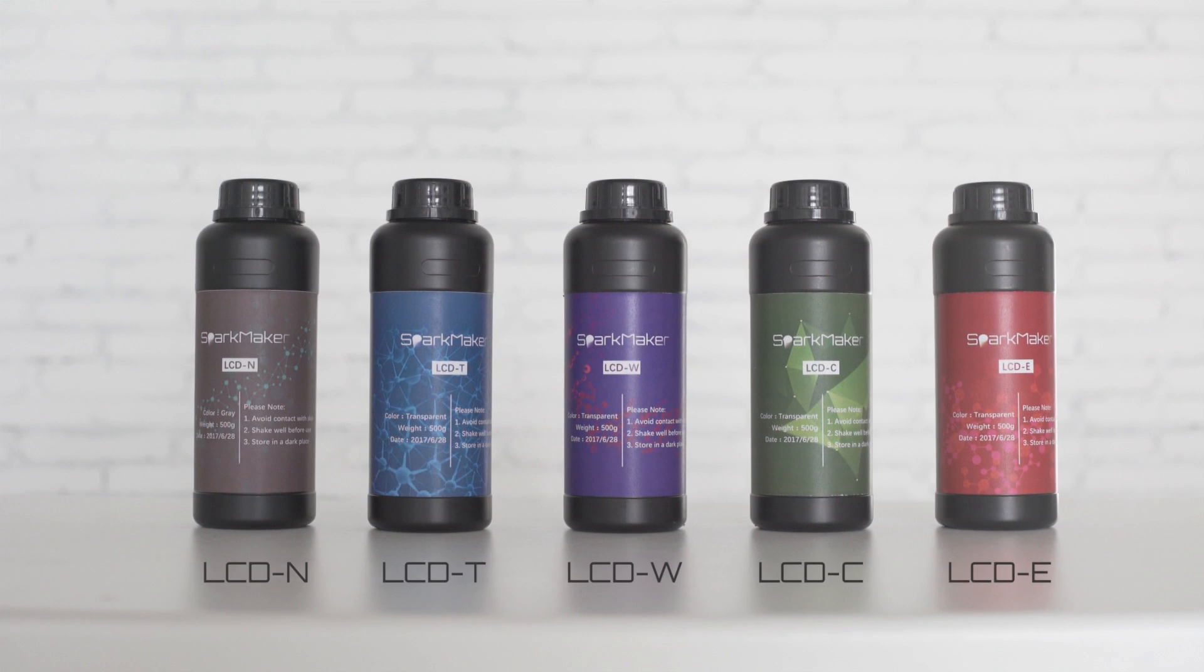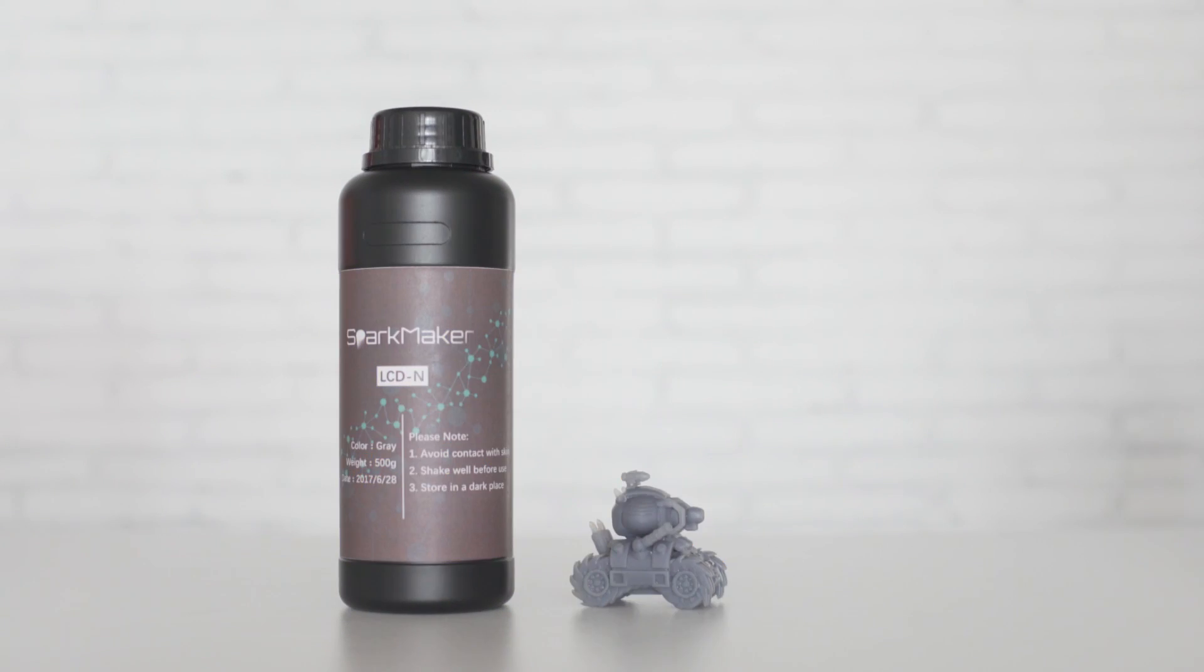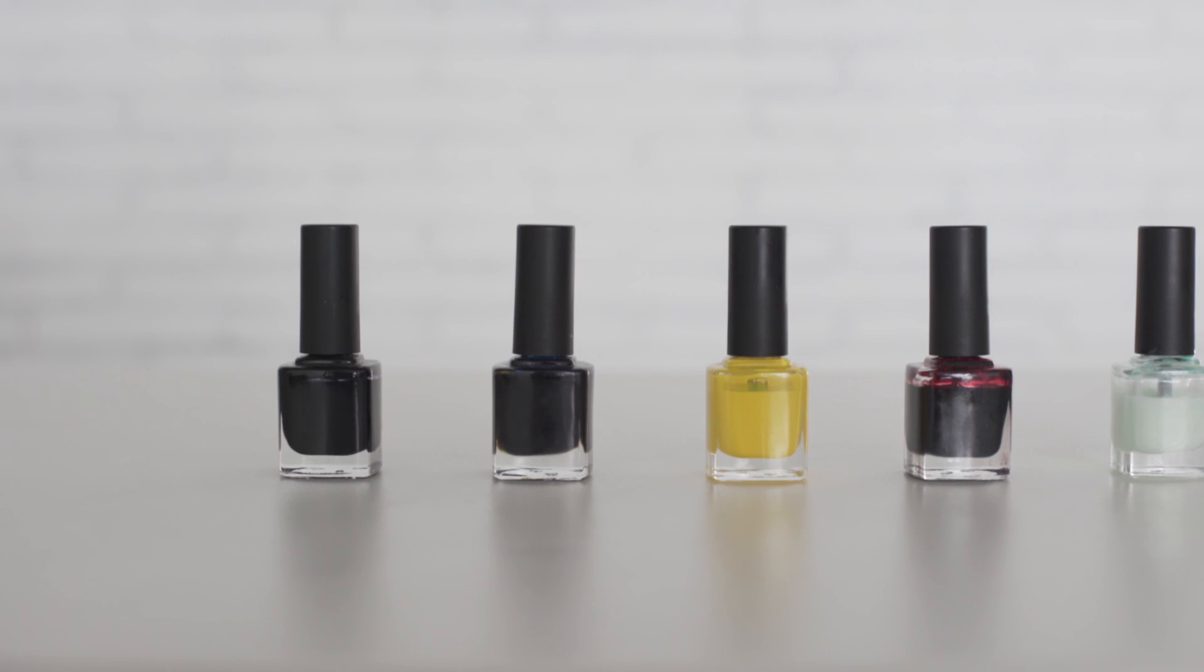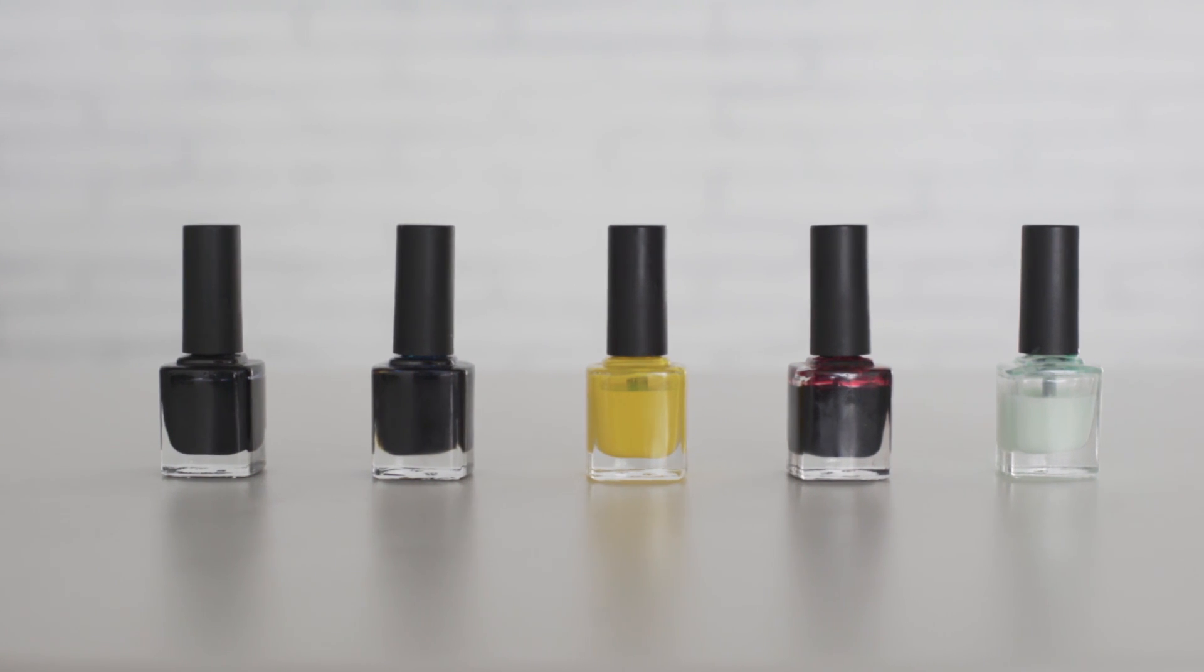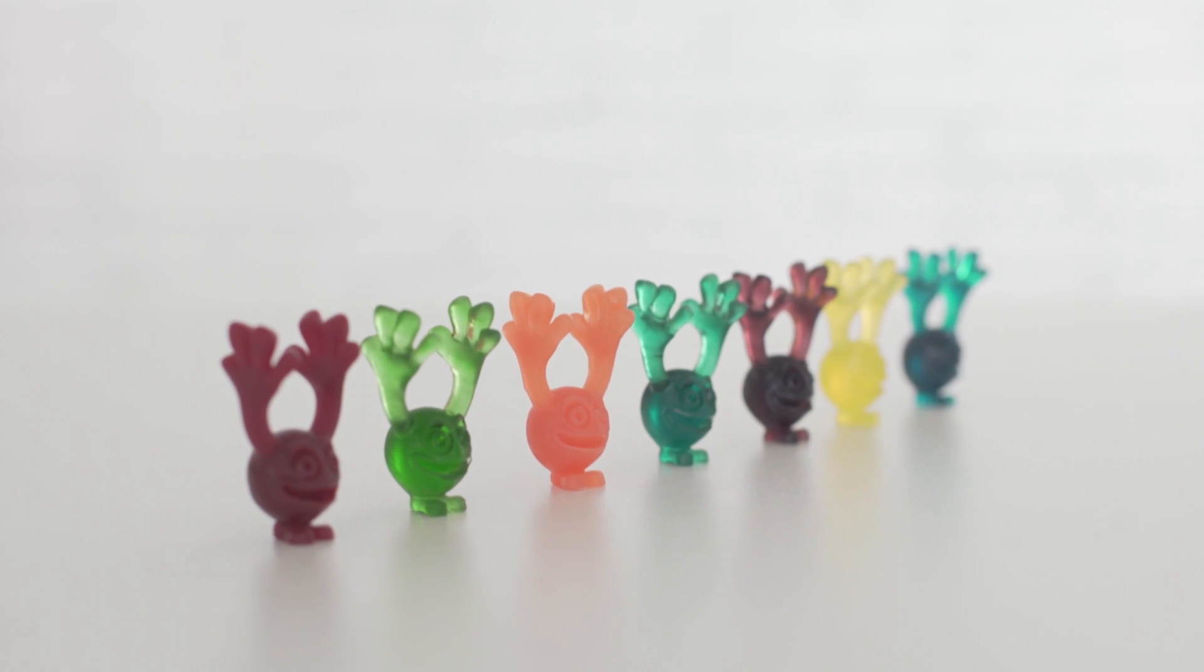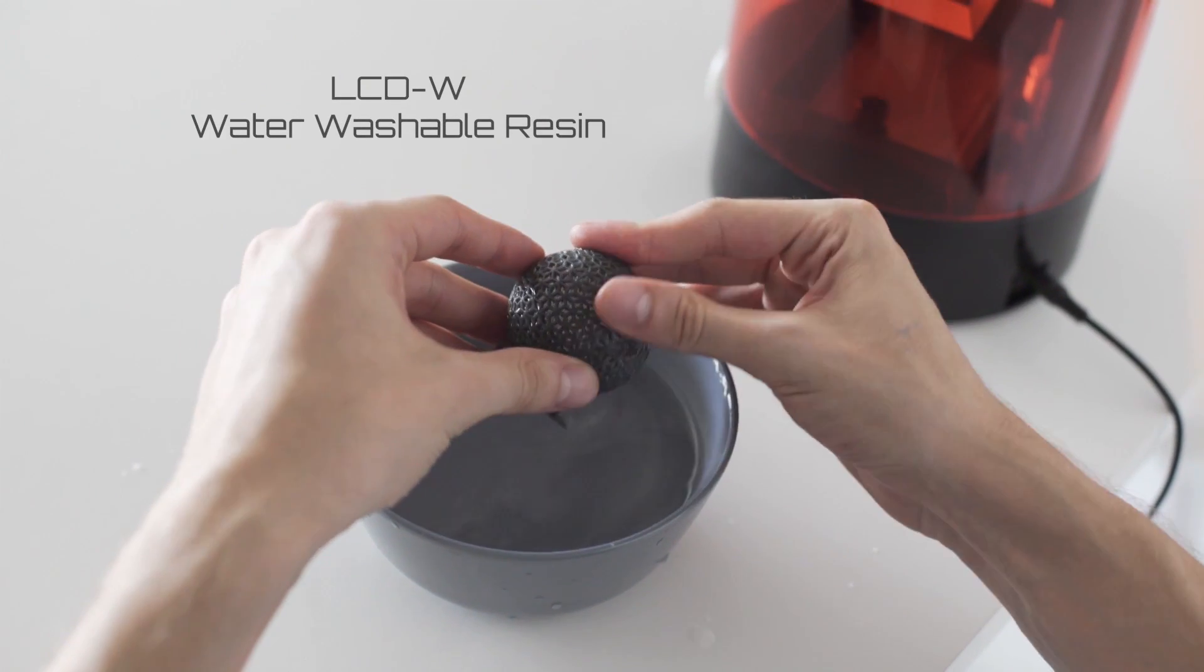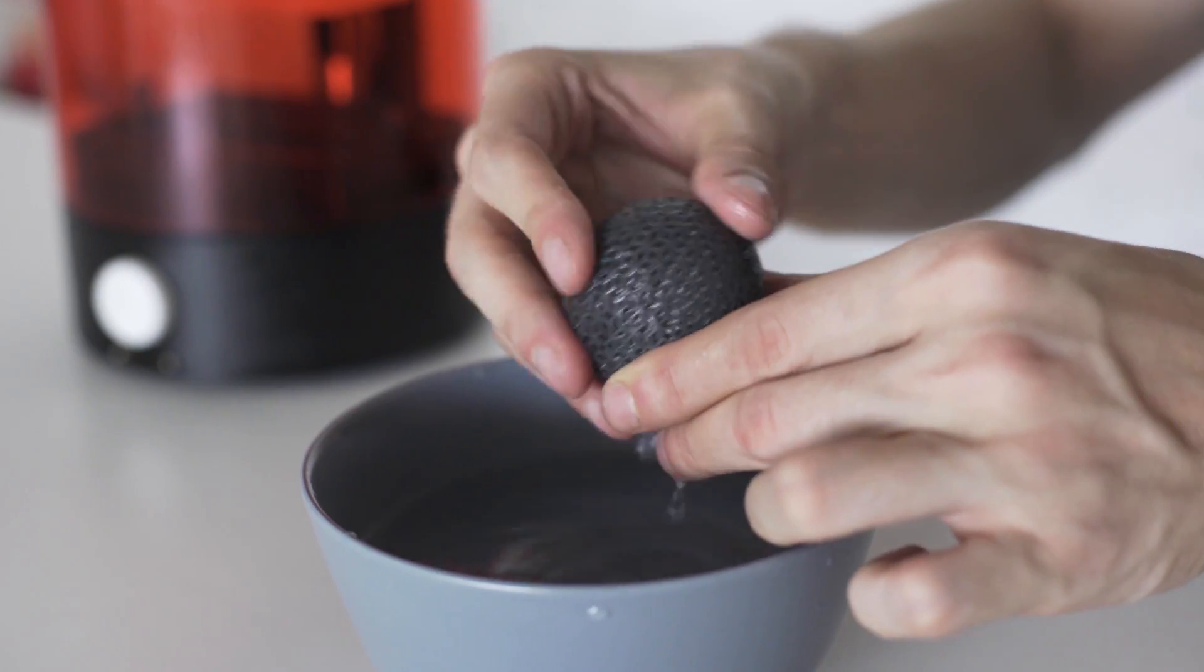SparkMaker comes with 5 types of resins for different objects you want to create. And with 5 types of color paste, you can print any color you want. If you don't want to get messy with typical resins, we also provide a special resin that can be cleaned by water directly.